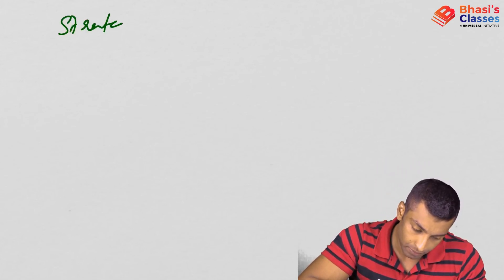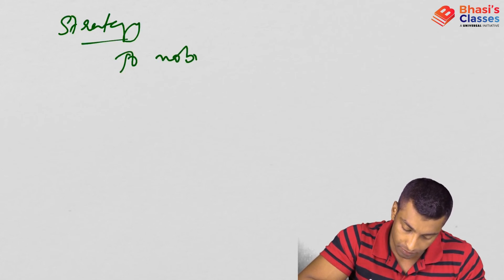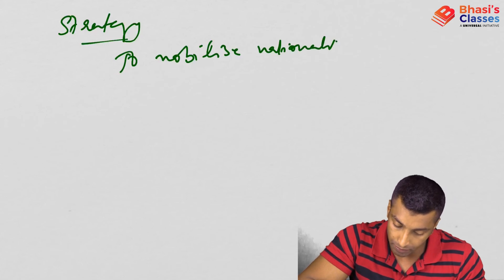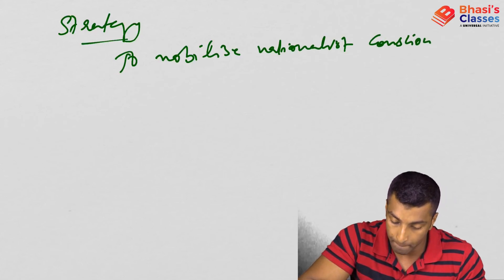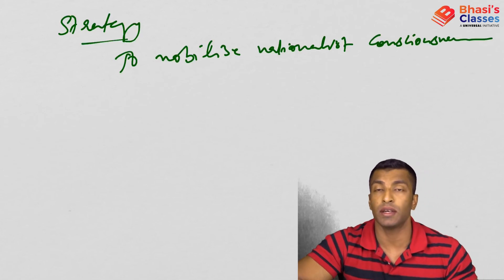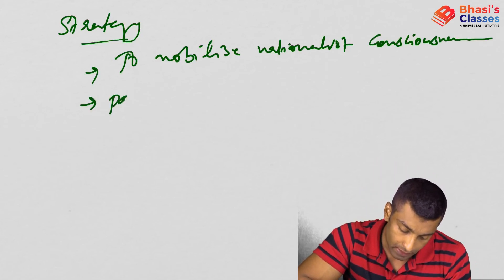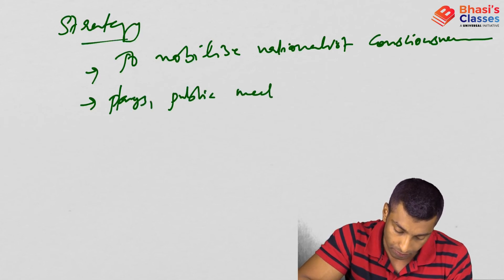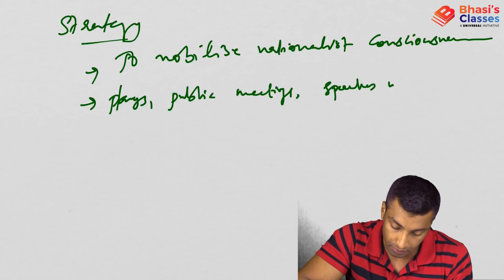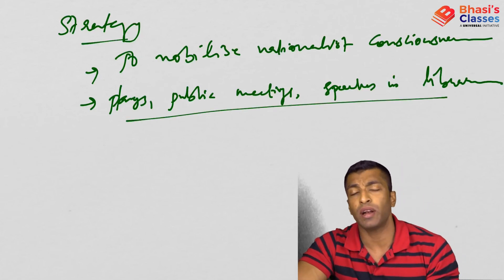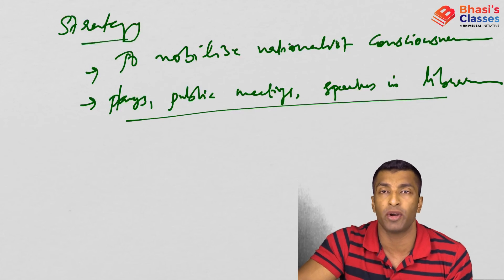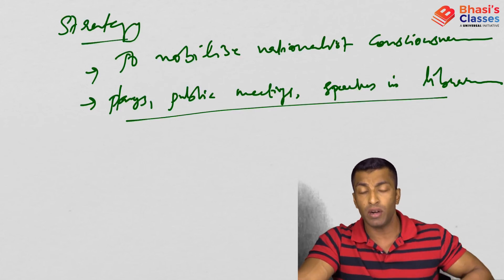The strategy of the Home Rule League was to mobilize nationalist consciousness amongst the Indian masses through public meetings, speeches, libraries, and educating Indians about the involvement of Indian troops in World War One.